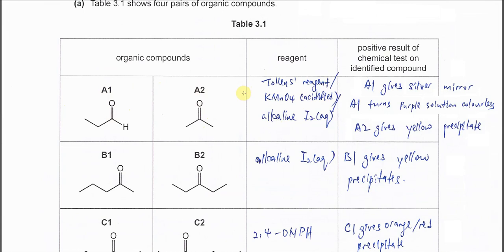Reagent that can be used to show the positive results is Tollen's reagent because we want to distinguish A1 and A2. Tollen's reagent used, A1 will react because it's aldehyde, so it will form silver mirror.